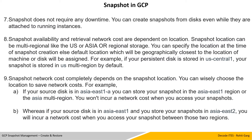Whereas, if your source disk is in Asia East 1 and you store your snapshot in Asia East 2 or some other region, then it will incur a network cost when you access your snapshot between two regions. Individual planning or scheduling of snapshots needs to account for these things so that you can optimally use your budget wisely and reduce cost through efficient planning.